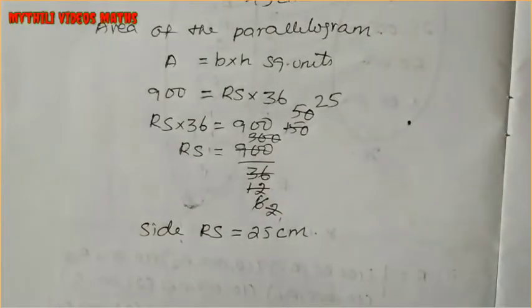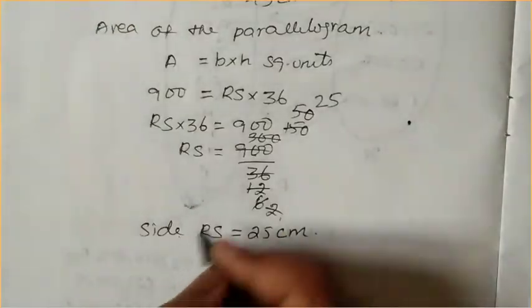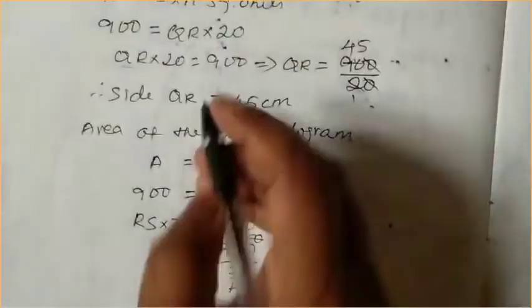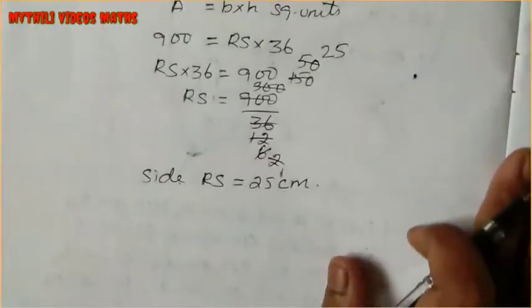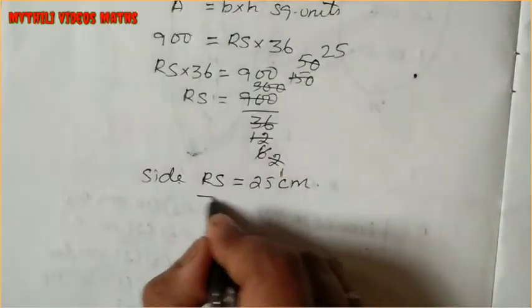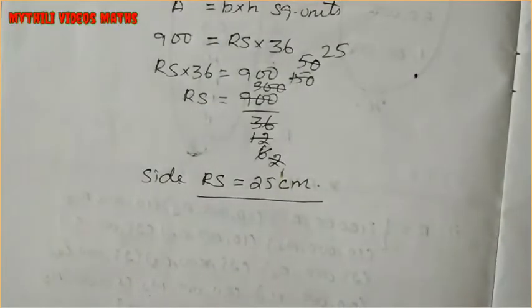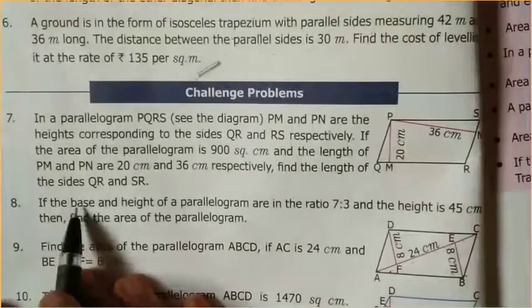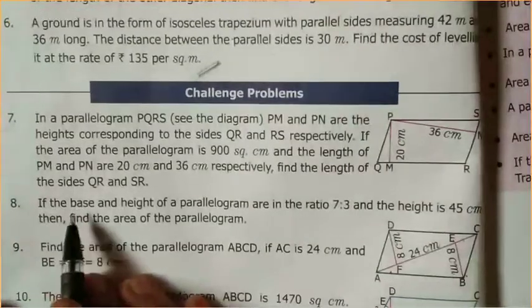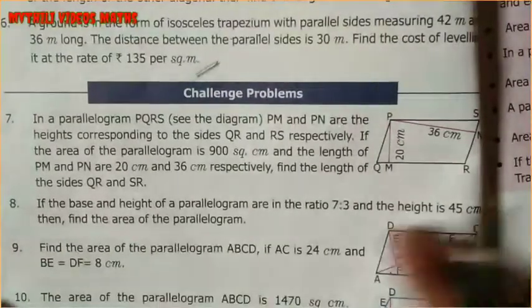So with these two values we have found both sides. The answers are QR equals 45 cm and RS equals 25 cm. Now we will see the 8th sum.